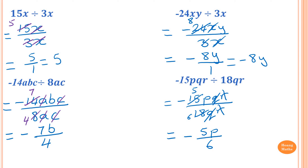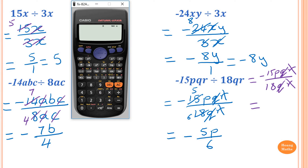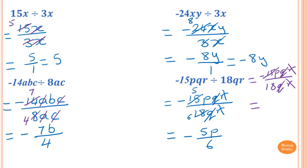If you're not 100% confident with your division, you can use a calculator, but you need to get the right process first. Write in fractions: minus 15pqr over 18qr. The r and q cancel out, leaving minus 15p over 18. Using the calculator for 15 over 18 simplifies to 5 over 6 — write negative first. So the answer is negative 5p over 6.